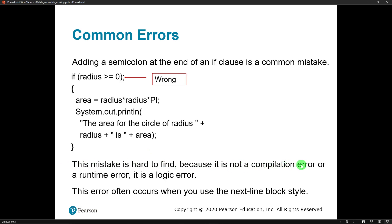What makes this hard to find - it's not a compilation error, it's not a runtime error, this is a logic error. So it's completely the programmer's fault. It's not that the compiler is doing anything wrong, it's doing exactly what you told it to do. It will compile just fine, it's not a runtime error, it's not going to crash your program, it's just going to run some lines that you didn't intend to run regardless of the condition in the parentheses. This error often occurs when you use the next line block style. You tend not to do it if you're using the same line block style.